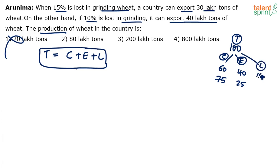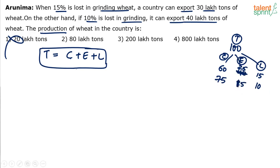For example, if the loss is 15 and consumption is 60, then 75 is accounted for and only 25 can be exported. If the loss is 10 and consumption is 75, only 15 can be exported. The total has to balance to 100.